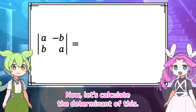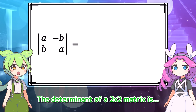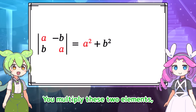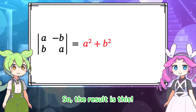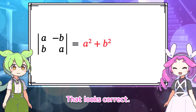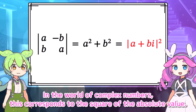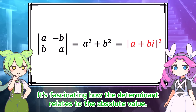Now let's calculate the determinant of this matrix. The determinant of a 2 by 2 matrix: you multiply the diagonal elements, then subtract the product of the off-diagonal elements. So the result gives A squared plus B squared. In the world of complex numbers, this corresponds to the square of the absolute value. It's fascinating how the determinant relates to the absolute value.